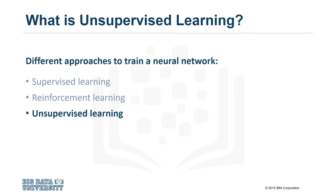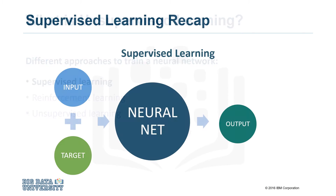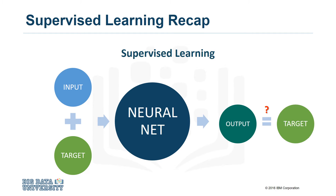But before explaining what unsupervised learning is, it might be helpful to recall how supervised learning works. In a supervised learning algorithm, the machine receives a dataset containing inputs and the targets associated with each input sample. After processing the data, the resulting output is compared with the target from the dataset. If the results differ, the net is fine-tuned until it can more accurately model the training data.